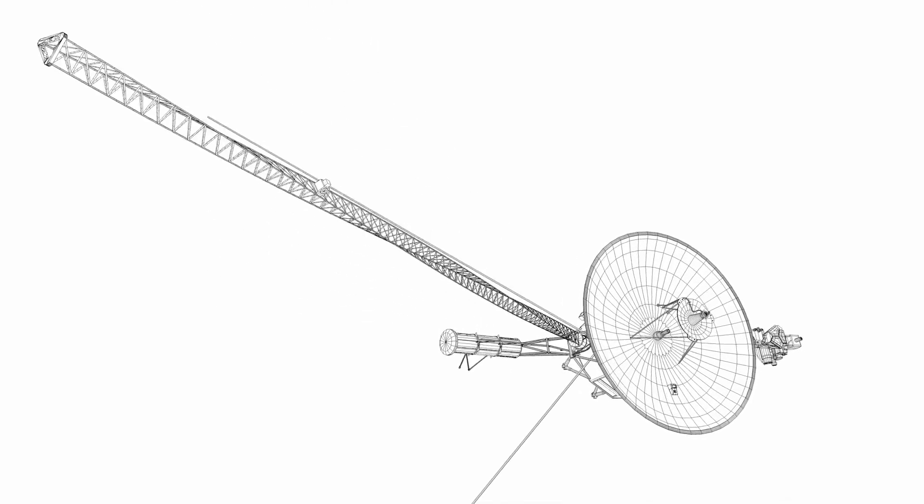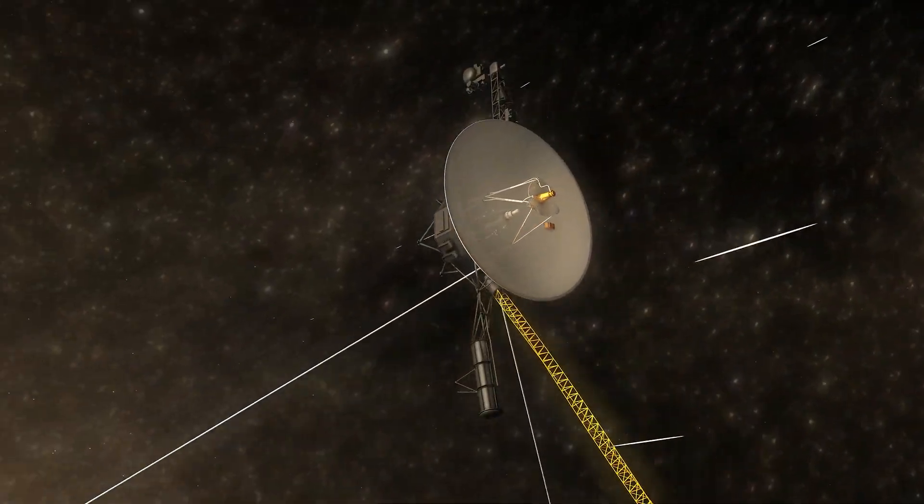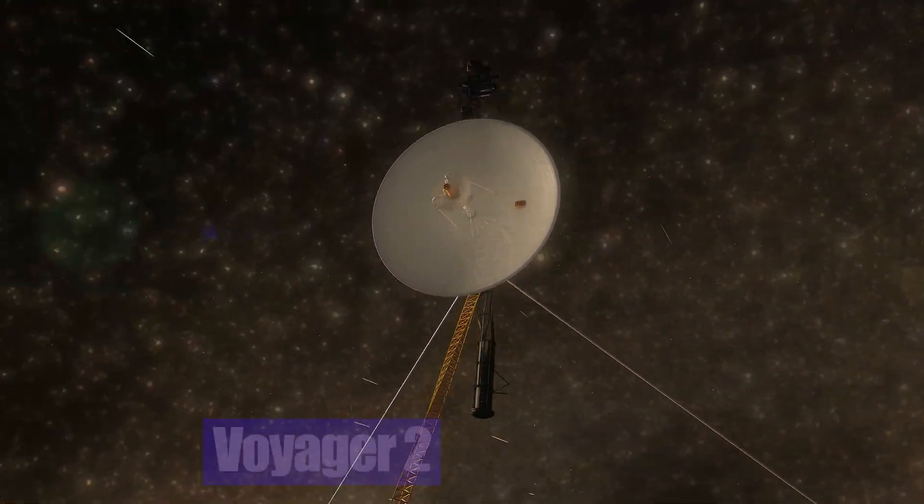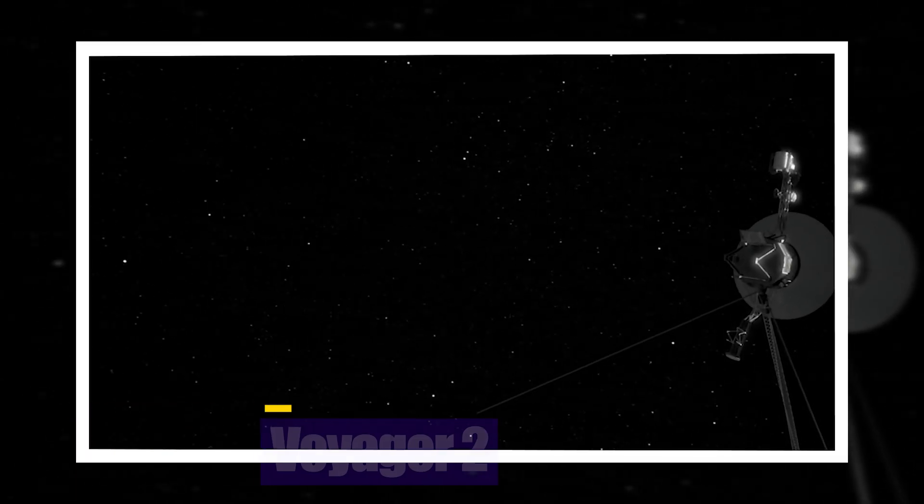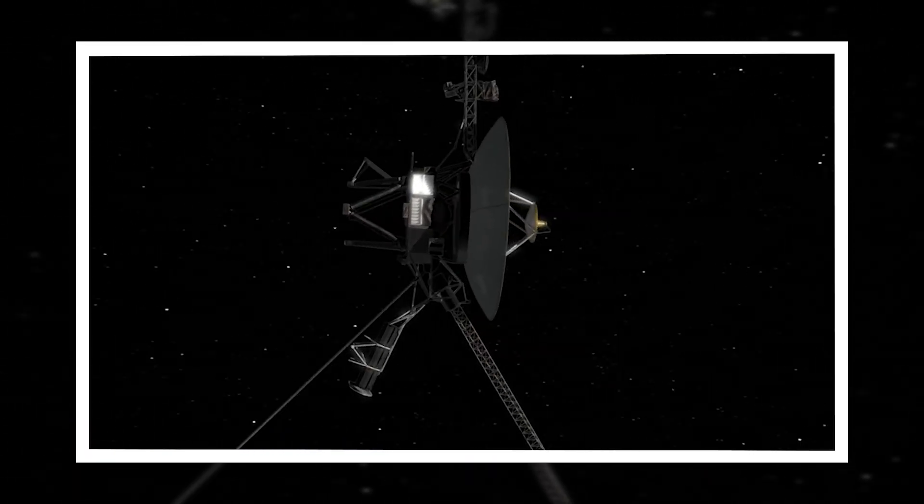Despite what their names would imply, the first explorer to depart from Earth was Voyager 2. The launch on August 20, 1977, was successful, and Voyager 1 followed in September.